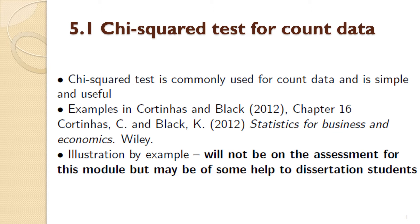This won't be on the assessment for this module, but it may be of help to dissertation students. It's quite common when people do dissertations, especially in social science type areas, that the data they collect can be expressed in the form of what are called contingency tables, which are essentially just a table of counts. This chi-squared test can often be used, and even if you're not particularly interested in these techniques, they can have deceptively broad application within accounting, finance, and other areas of social science.